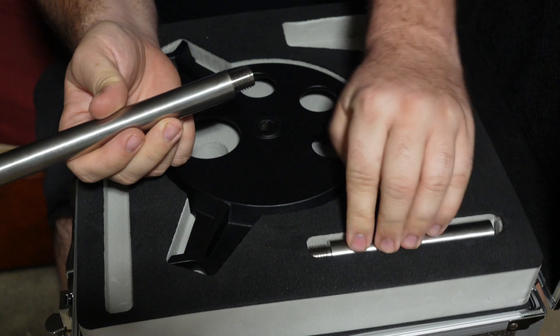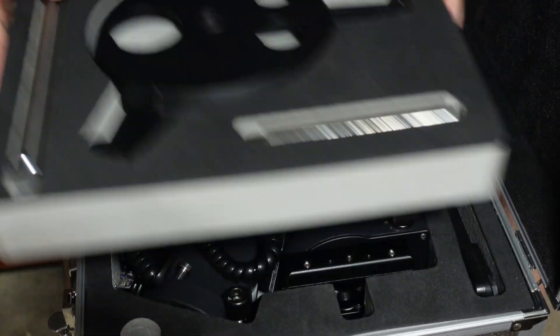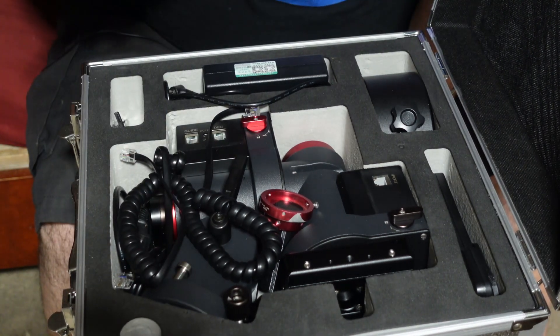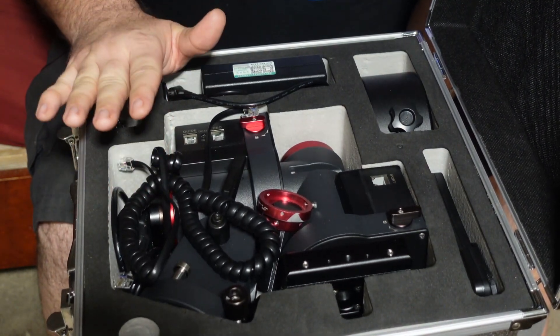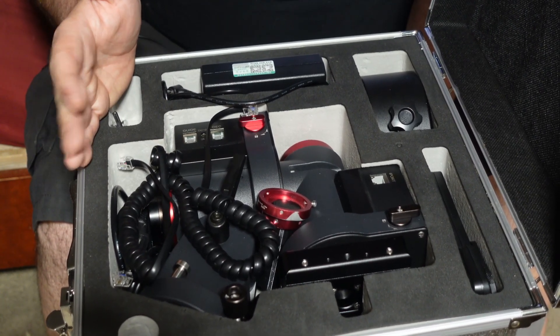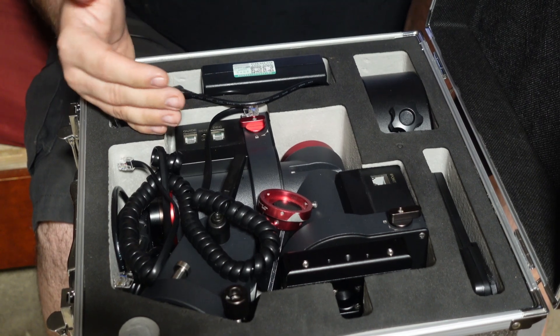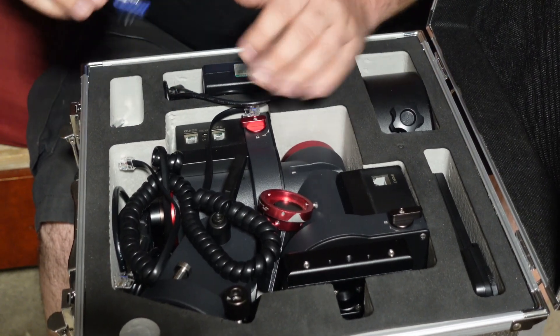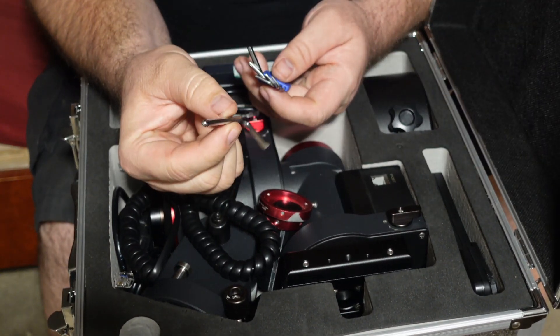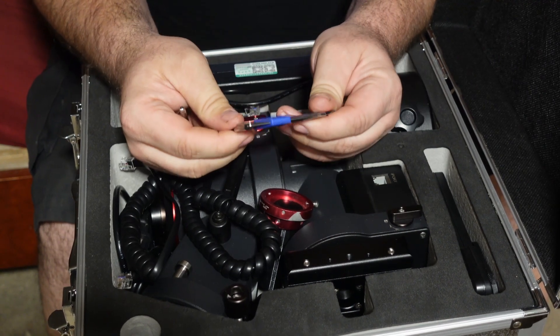We have a counterweight bar as well as an extension for the counterweight bar just in case you need to extend it for a little bit more balancing. Underneath you have the actual mount. As I said, this is several weeks or about a week and a half after I got the mount, so I've already learned a little bit. I've put not only this allen wrench that came with the mount, but I put this set of allen wrenches in here as well.